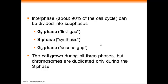Interphase, which is a majority of the cell cycle, is divided into three sub-phases: the G1 phase, the S phase, and the G2 phase. During both G phases, the cell grows, protein synthesis occurs, and organelles are duplicated. In the S phase — named for its main process, the synthesis phase — all of the chromosomes are duplicated, meaning DNA is synthesized to duplicate the entire genome.